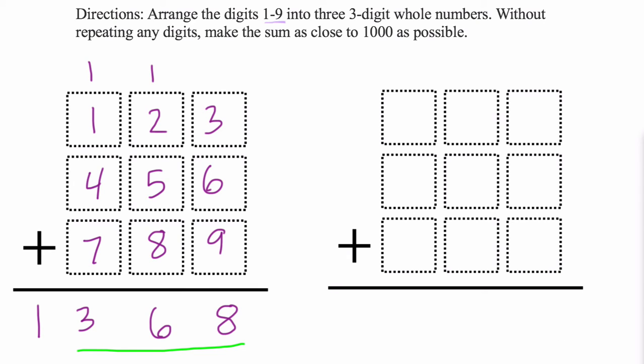Okay, so what are some strategies that we can use? Well, you might notice here that in this column, this is the hundreds column, and our goal is to get as close to 1,000 as possible. So one thing you might realize right away is that you don't want to put the 9 and 8 and 7 in this column.